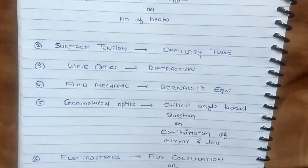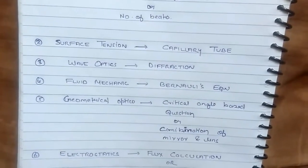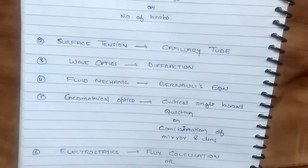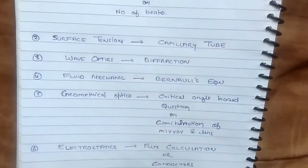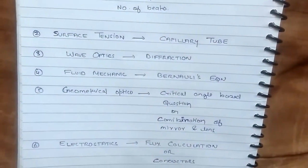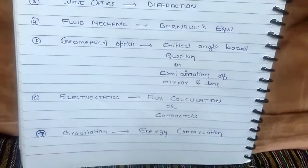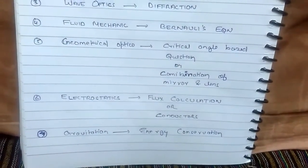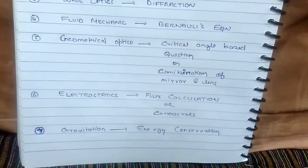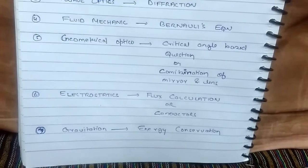Geometrical optics: critical angle based question or combination of mirror and lens. Electrostatics: flux calculation or conductors. Gravitation.